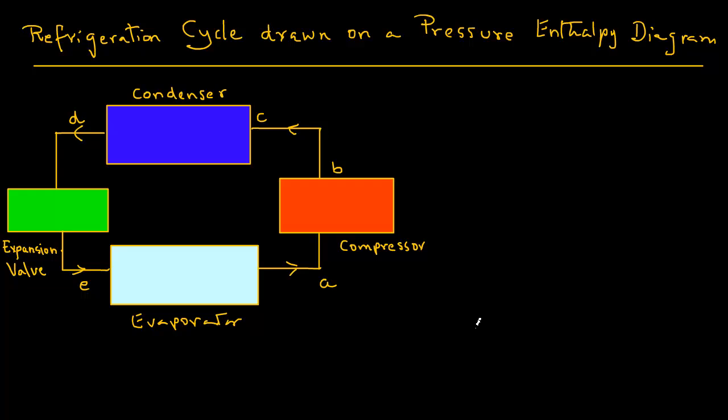Recall the letters E, A, B, C, D that refer to the conditions of the refrigerant as it moves through the system. Now let's draw a pH diagram. We have the x-axis and the y-axis. Remember that pressure is shown on the y-axis and enthalpy is shown on the x-axis. We draw a bell-shaped curve skewed to the right.